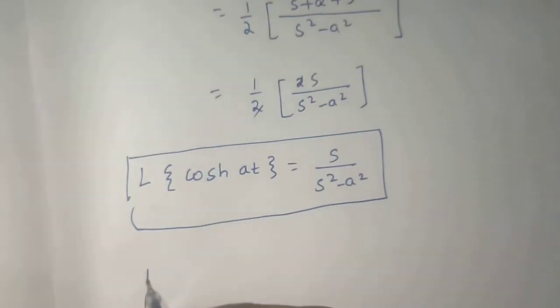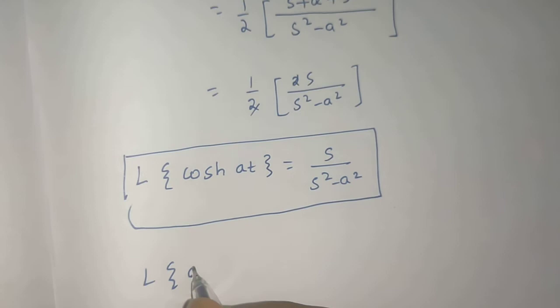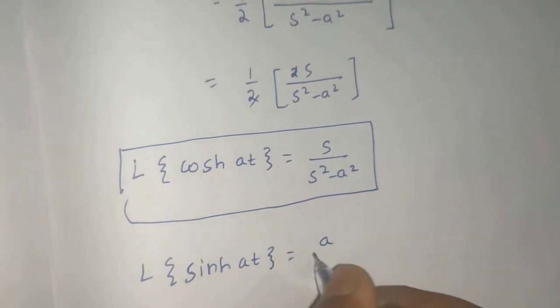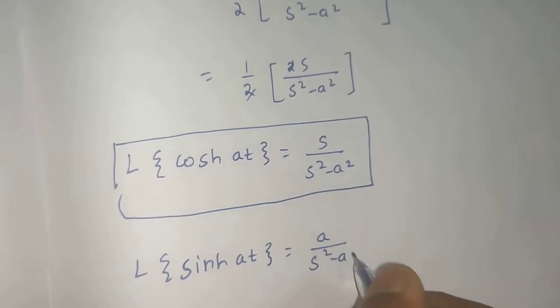And in the last video we proved that Laplace of sinh of at is given by a divided by s squared minus a squared.